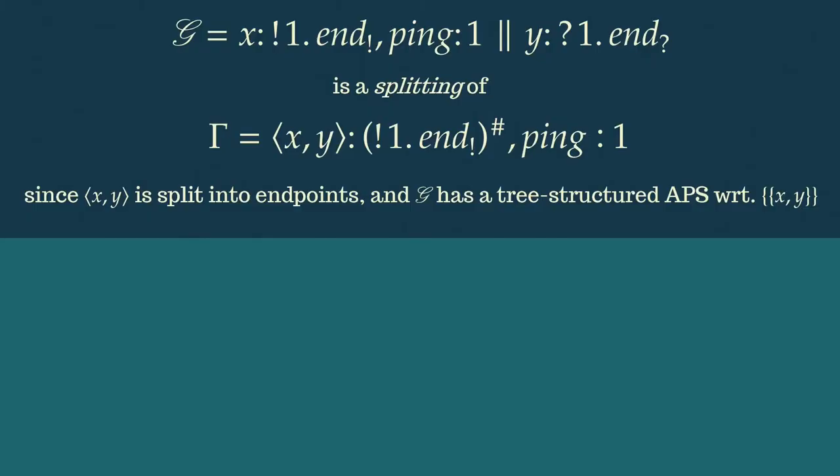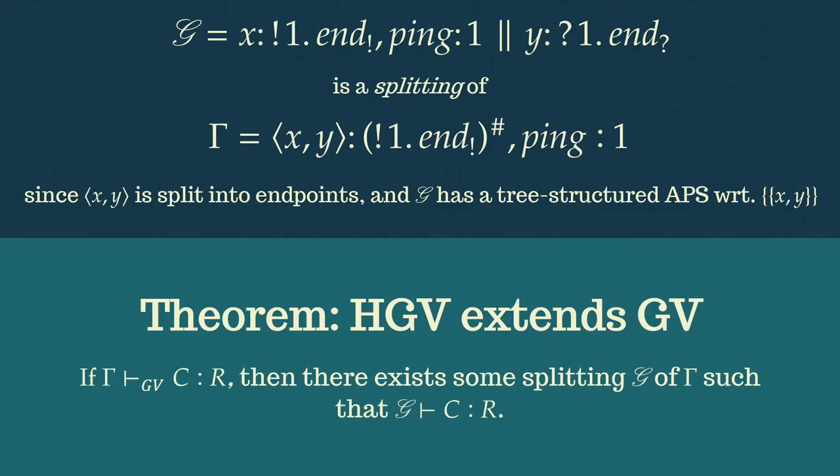Okay, so the next contribution is relating HGV and GV. So every GV configuration is typable in HGV. To show this, we introduce splittings, which are HGV environments which maintain the separation enforced by the S-sharp pseudotype in GV. So as an example, consider Γ here, which contains an unsplit channel with endpoints X and Y with session type send a unit type and finish, and says that variable ping has the unit type. Now, hyperenvironment G is a splitting since it contains X and Y with dual session types and it forms a tree structure, abstract process structure. Then we can show that every GV configuration is typable in HGV under a splitting of its typing environment, and this falls out as a very straightforward induction.